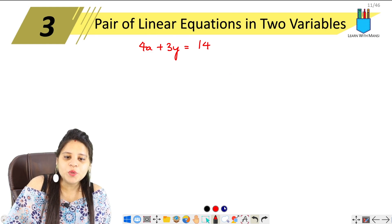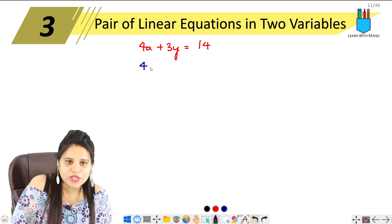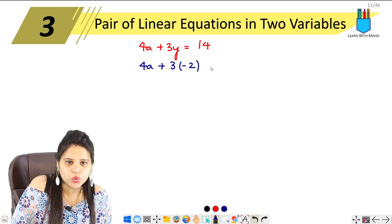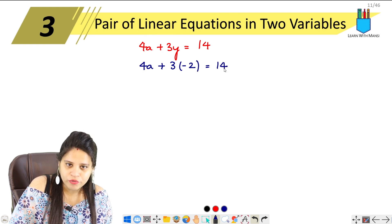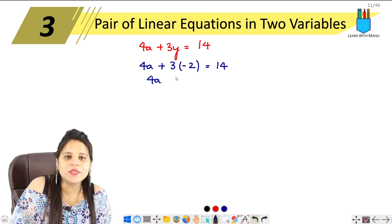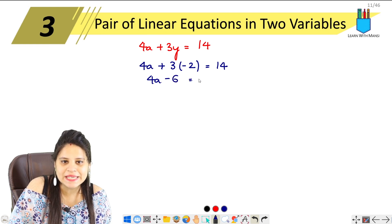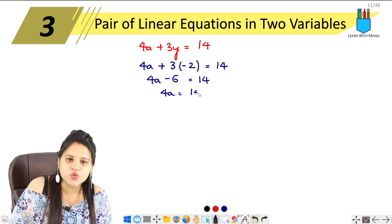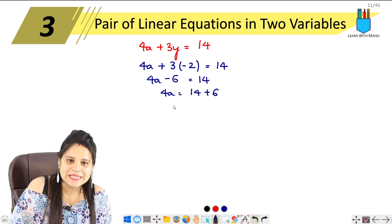And here we have to put the value of y. So y will be 4a plus 3, in place of y, minus 2 equals to 14. Okay, this is done. 4a, 3 twos are 6, plus minus is minus equals to 14. So this becomes 4a equals to 14 plus 6.